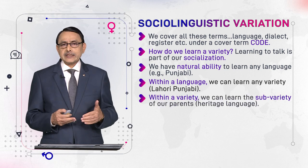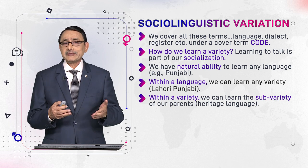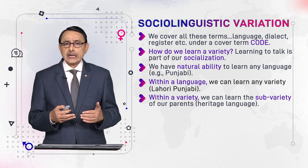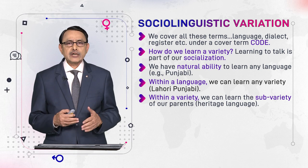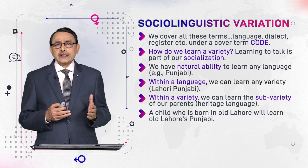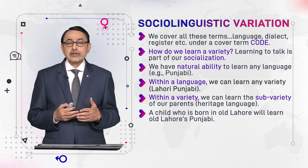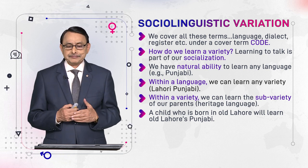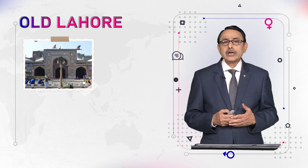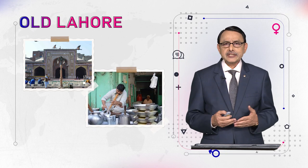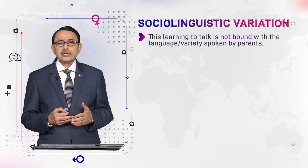Within a variety, we can also learn the sub-variety of our parents — the variety of Punjabi spoken by our parents. This variety is technically called the heritage language or heritage variety. So a child born in old Lahore, for example the walled city of Lahore, will learn Lahori Punjabi.